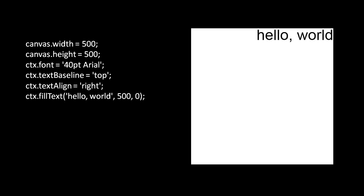Here's a simple example of drawing text. We have a 500x500 canvas, set our font to 40pt Arial, then set textBaseline to top and textAlign to right. We invoke fillText with the string "hello, world" at coordinate (500, 0) — the very top right of the canvas. Because textBaseline is top, the text is rendered below the y coordinate of 0, and because textAlign is right, our x coordinate specifies the right side of the text. There's a small gap between the text and the corner, because the top baseline isn't at the very top of the letters, and there's always a small space between the specified coordinate and the first character.